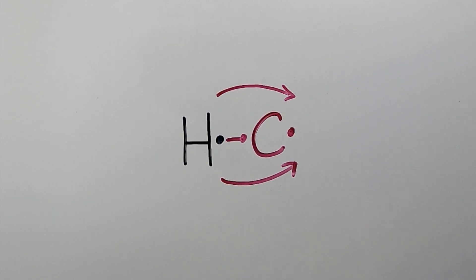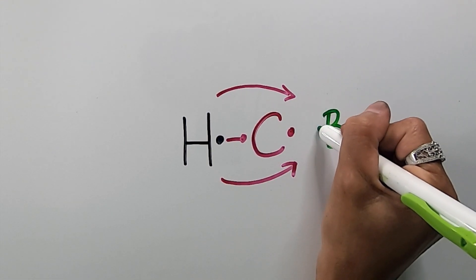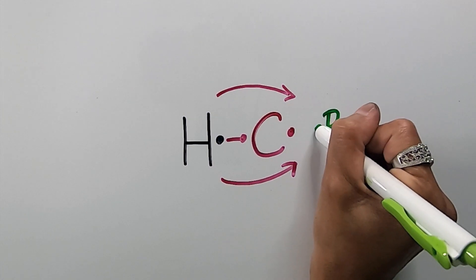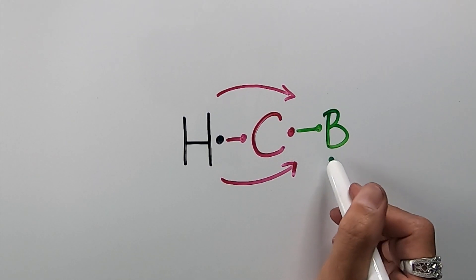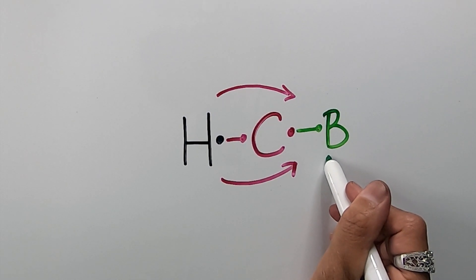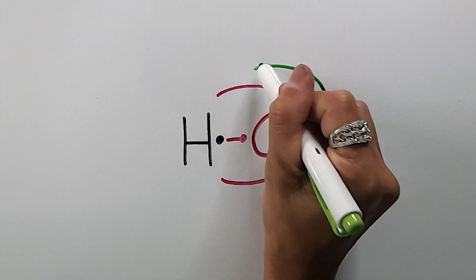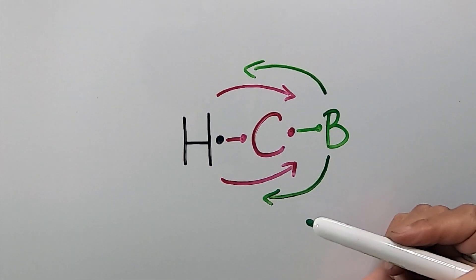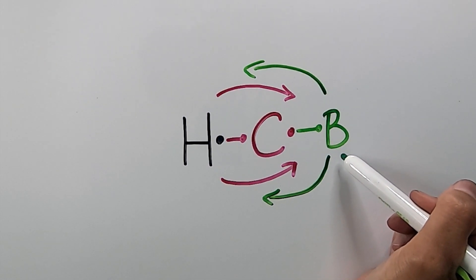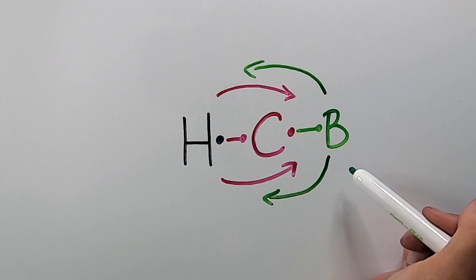Alternately, suppose a less electronegative atom formed a bond with the carbon, like boron for instance. Carbon, being more electronegative than boron, will actually cause an inductive effect and withdraw electrons from boron's electron cloud, and therefore become more shielded, while boron will be deshielded, losing electron cloud density.